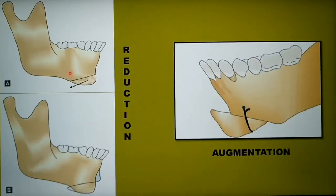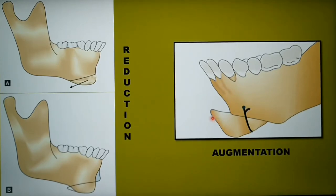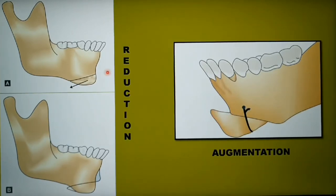Now that the osteotomy is complete, let's see how the osteotomized segment can be repositioned. This is an example of augmentation genioplasty, wherein the cut inferior segment is moved anteriorly and fixed using wires or semi-rigid plates — in this case the chin is advanced. You may also perform a retropositioning of the chin by pushing the chin behind.